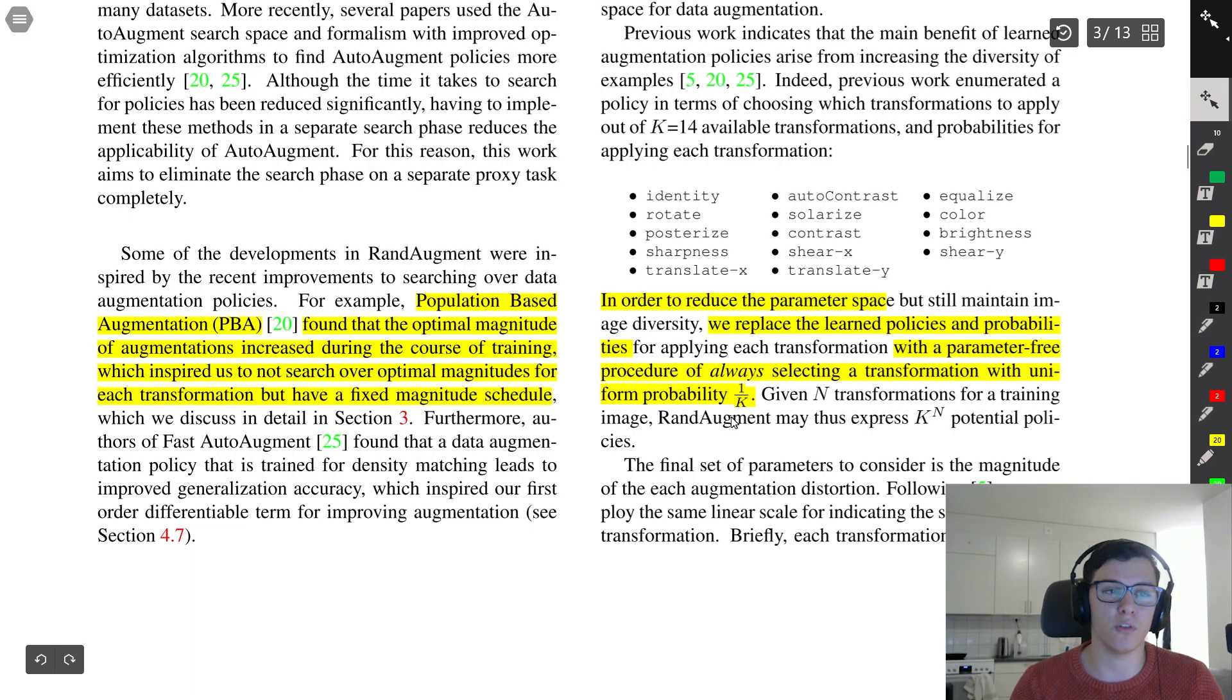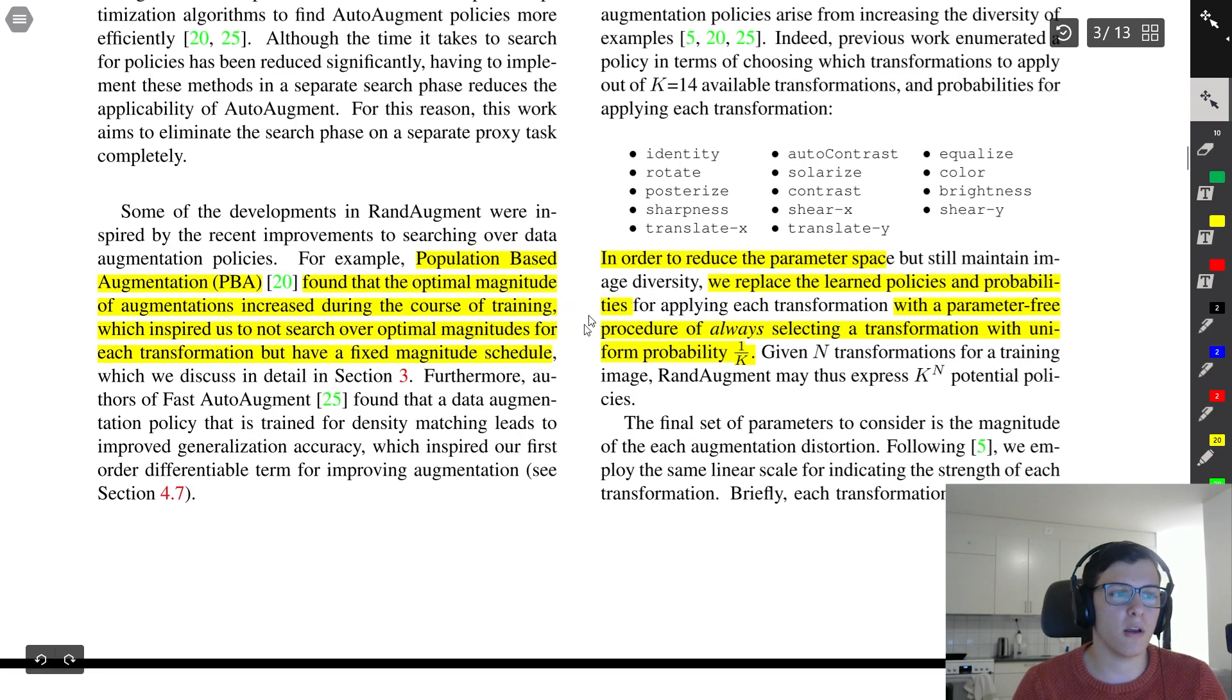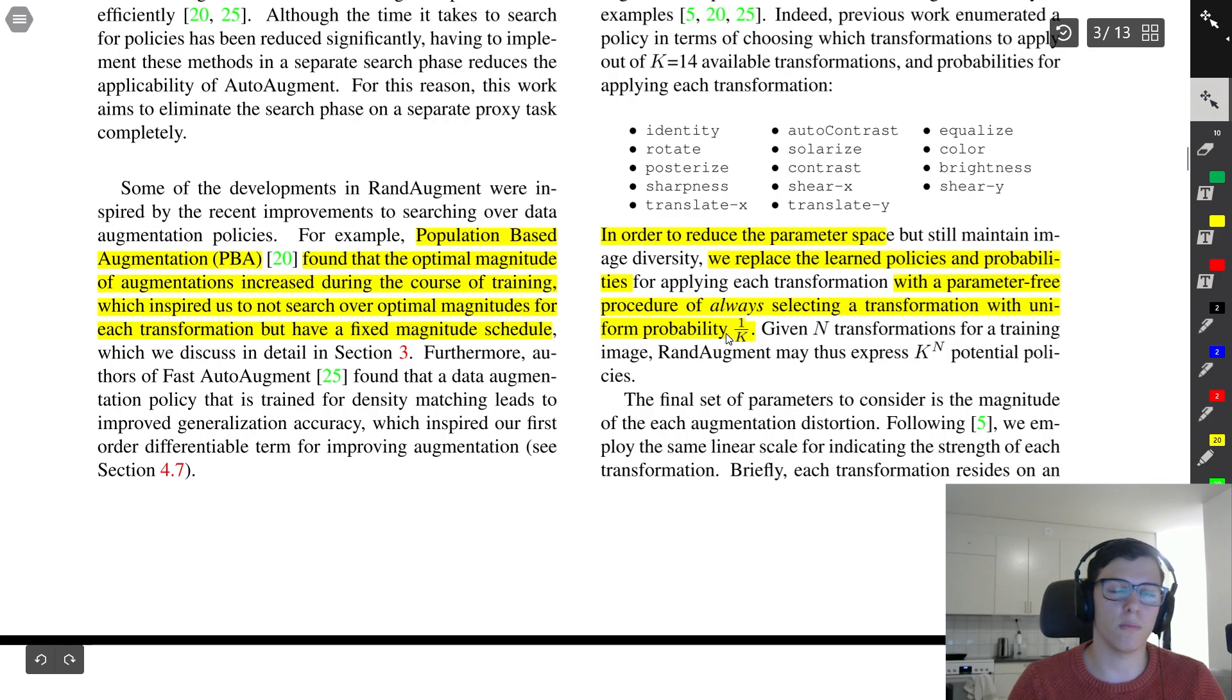In order to reduce the parameter space, they also replace the learning policies and probabilities for each transformation with a parameter-free procedure of always selecting a transformation with uniform probability 1 over k. We can imagine this is not the optimal way of doing things because perhaps sharing for some tasks is much more important than sharpness. They actually bring up some ideas later on in the paper for how they might do this differently, but anyways this is all because they want to reduce the search space.